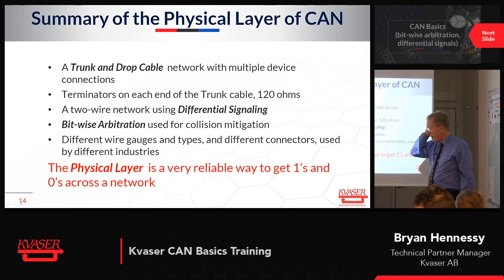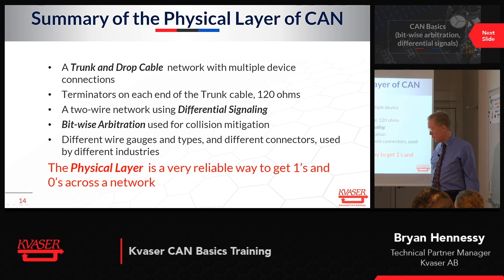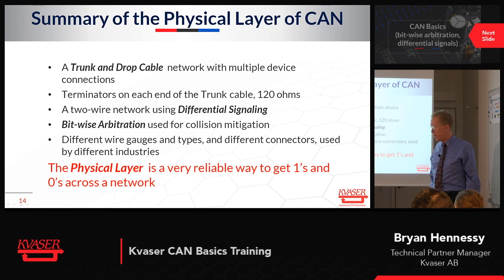Summary of the physical layer of a CAN network: it's a trunk and drop cable with multiple devices connected to the same two wires. Terminators on each end at 120 ohms — a two-wire network with differential signaling that I'll get into more when we get to bitwise arbitration next.